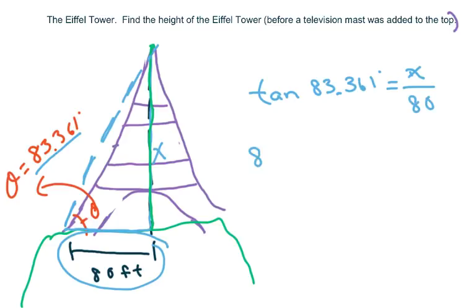And you cross multiply to get 80 times tan of 83.361, which is approximately 985.91 feet.